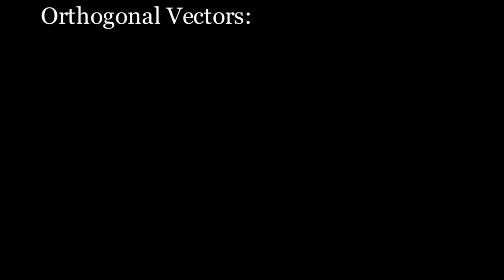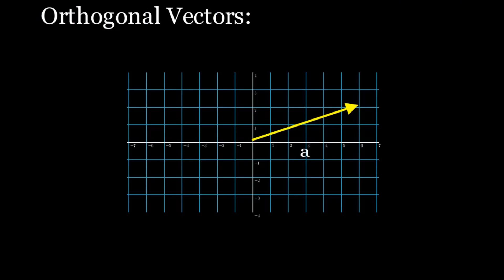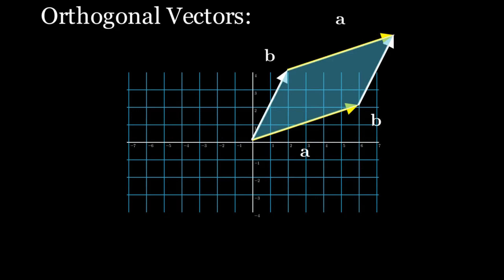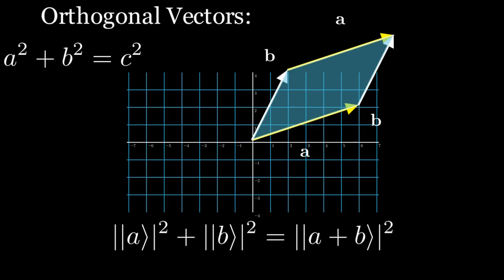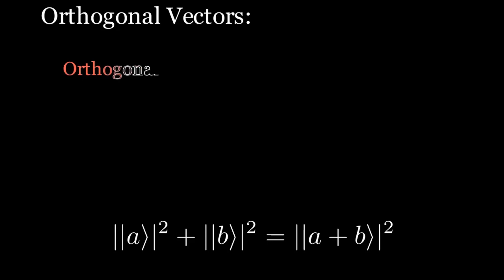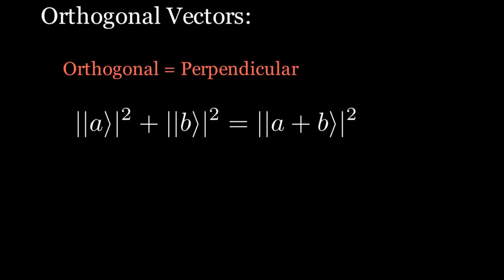Now let's see what orthogonal vectors means. From the Pythagorean theorem, if a, b, and c represent the lengths of the three sides of a triangle, then a² + b² = c² if and only if the triangle is a right triangle. This tells us that two vectors ket a and ket b are perpendicular if and only if |ket a|² + |ket b|² = |ket a + b|². The word orthogonal means the same as perpendicular and is the term used in linear algebra: ket a and ket b are orthogonal if and only if |ket a|² + |ket b|² = |ket a + b|².